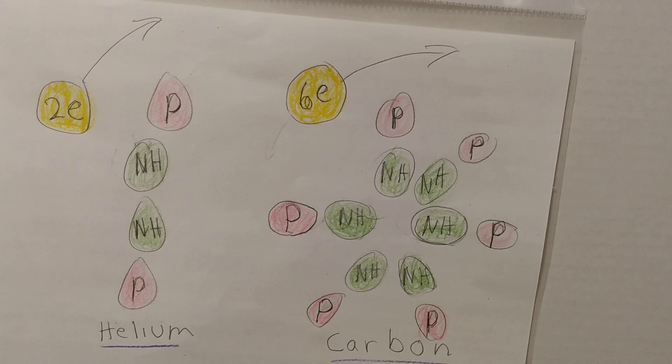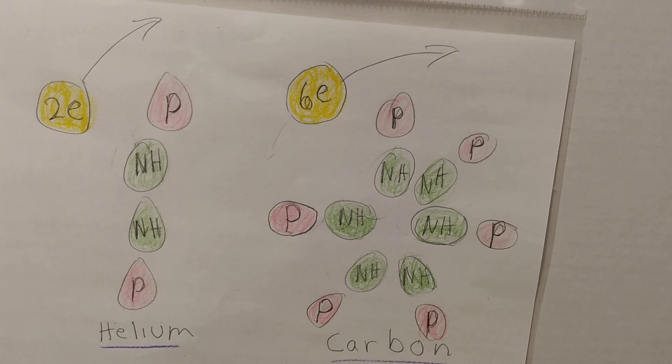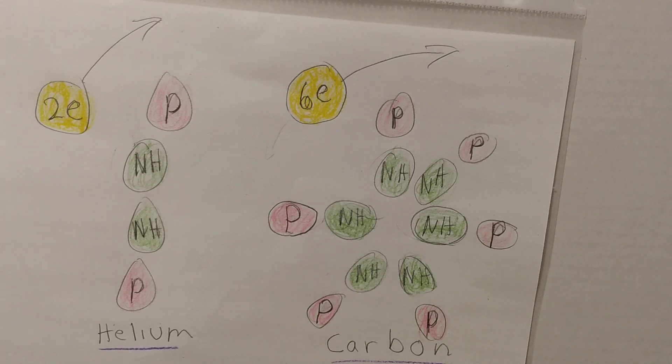Helium, two neutron-proton pairs. Carbon, six pairs. Oxygen, eight pairs. Neon, 10. Magnesium, 12. Silicon, 14.